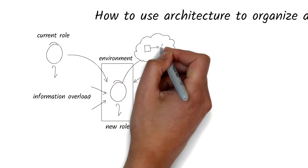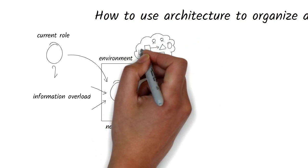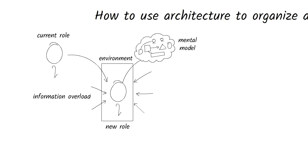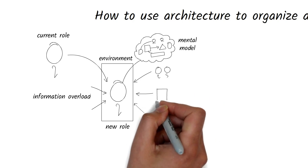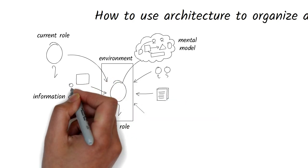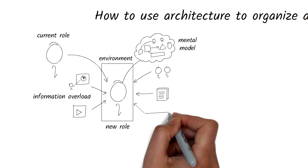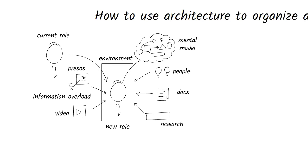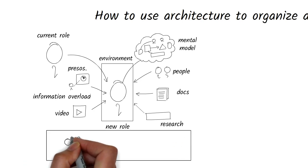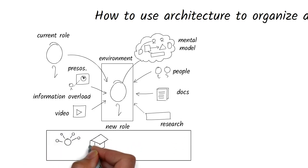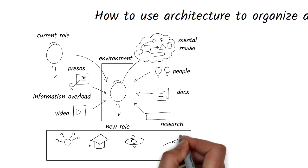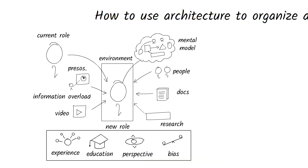With information coming from many sources, you will create a mental model and build your perspective of the environment. This information comes to you in many ways: people might share information, documents that you read, presentations you attend, videos you watch, and your own Google searches and so on. Combine this with your own experiences, your education, your perspective, your biases, and so on, and you end up with a complex mental model.